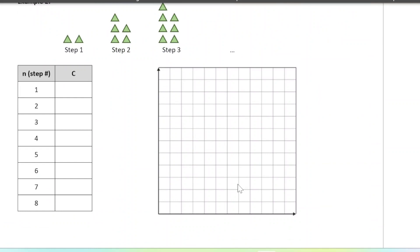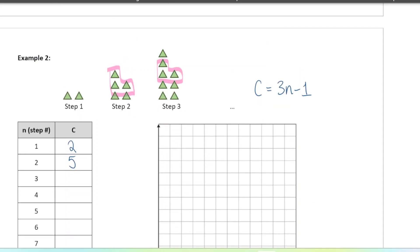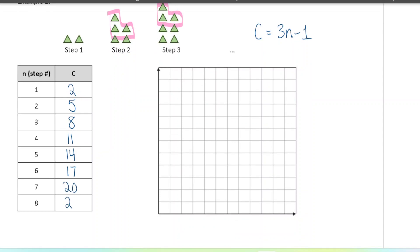Let's do the next pattern. Recall that our equation for this triangle pattern was C = 3n - 1. Let's fill out the table of values. This one also happens to be a linear pattern because every time I am increasing by three. I'm always adding three on to the pattern before it. So, two, five, eight, 11, 14, 17, 20, 23.